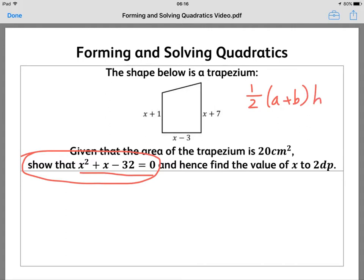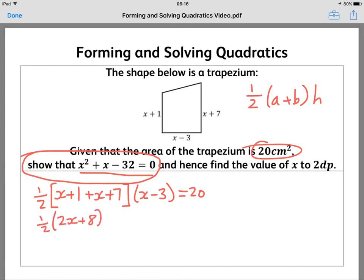So we're going to use that. I'm going to do a half, and I'm going to do X plus 1 is one of the parallel sides, plus X plus 7. They're the two parallel sides added up, and they're multiplied by X minus 3. Let's simplify that. And we know that's equal to 20. So add that up and simplify. We've got 2X plus 8, X minus 3 equals 20.